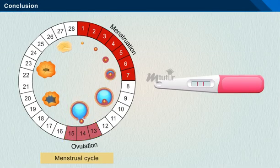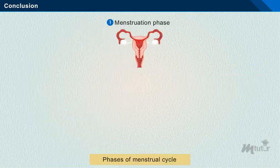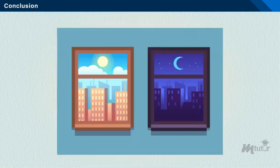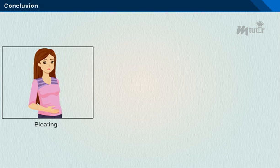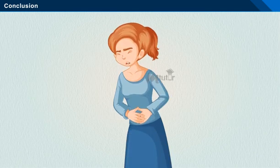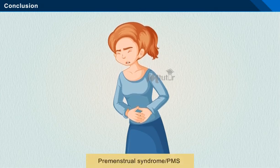Conclusion. Knowing when in the menstrual cycle a woman is most likely to conceive can increase the chance of pregnancy. The events of the menstrual cycle always occur in the same sequence, but their timing may vary considerably. Each month, some females have symptoms such as bloating, abdominal cramps, and mood swings for a few days before or during menstruation. If the symptoms are severe enough to interfere with daily life, the condition is called premenstrual syndrome (PMS).